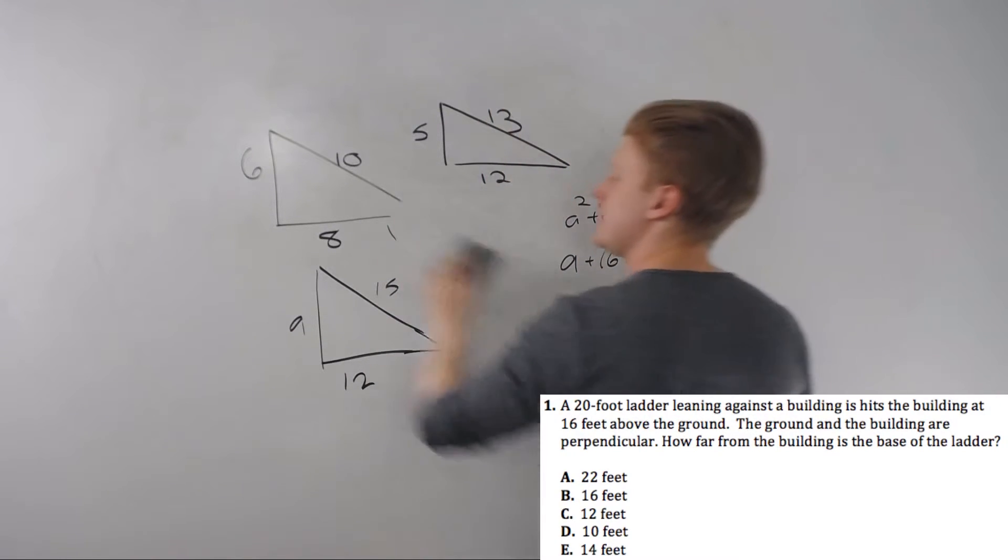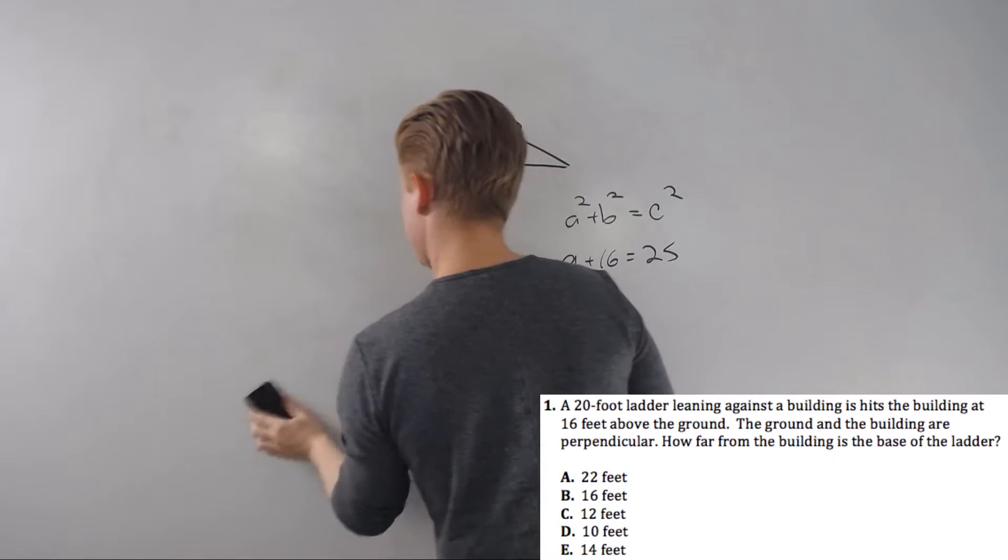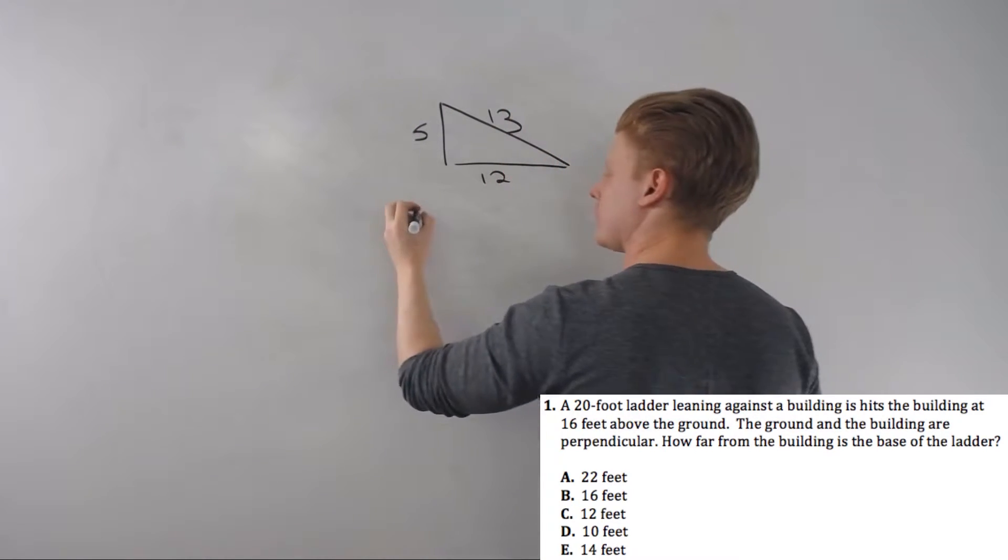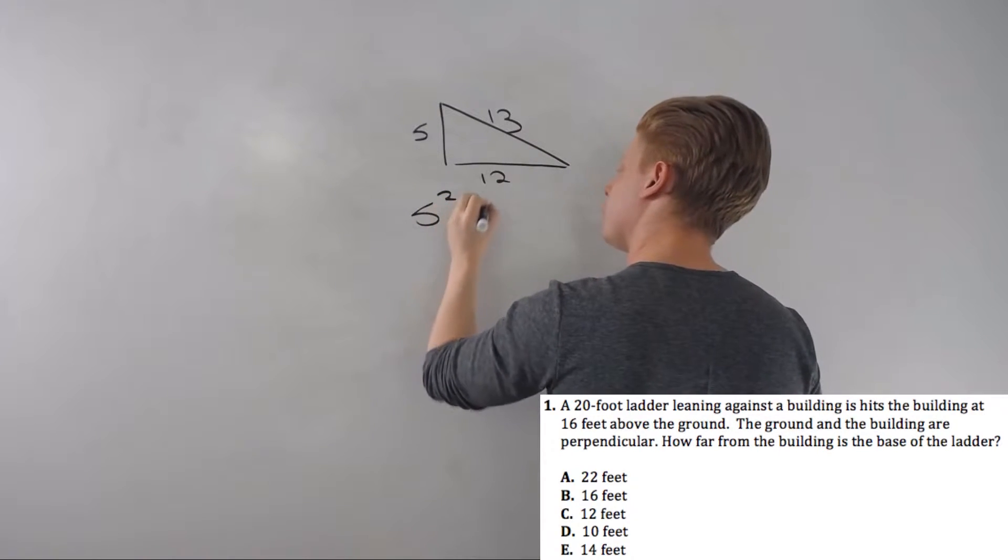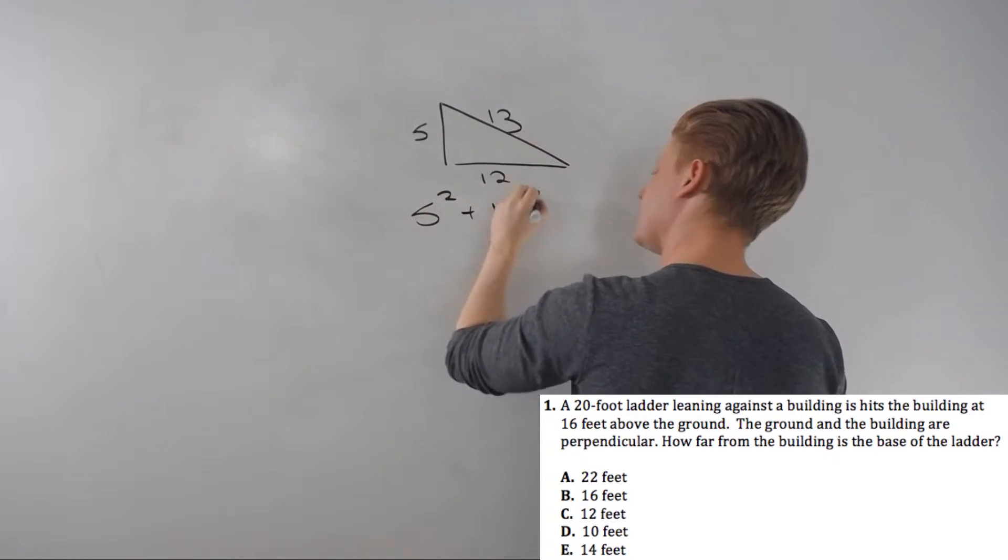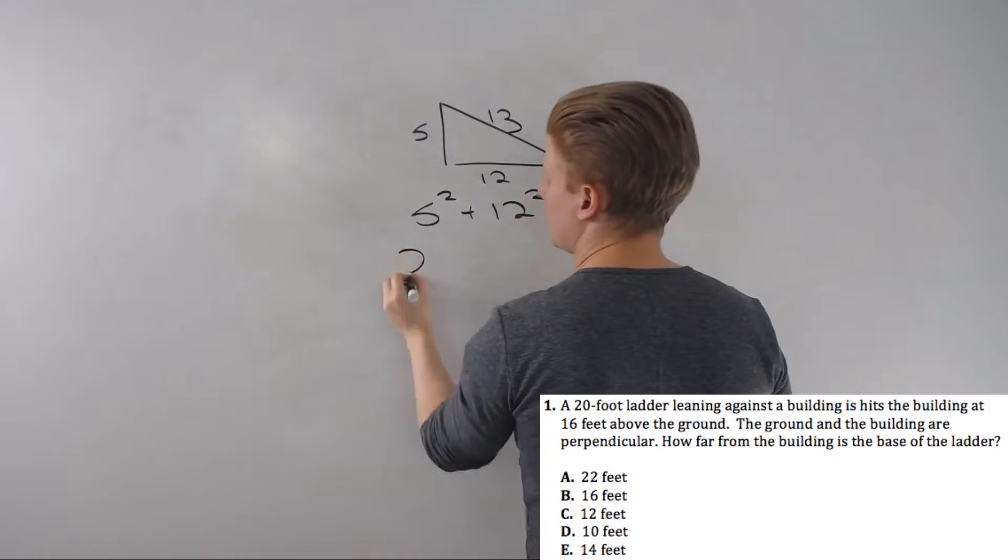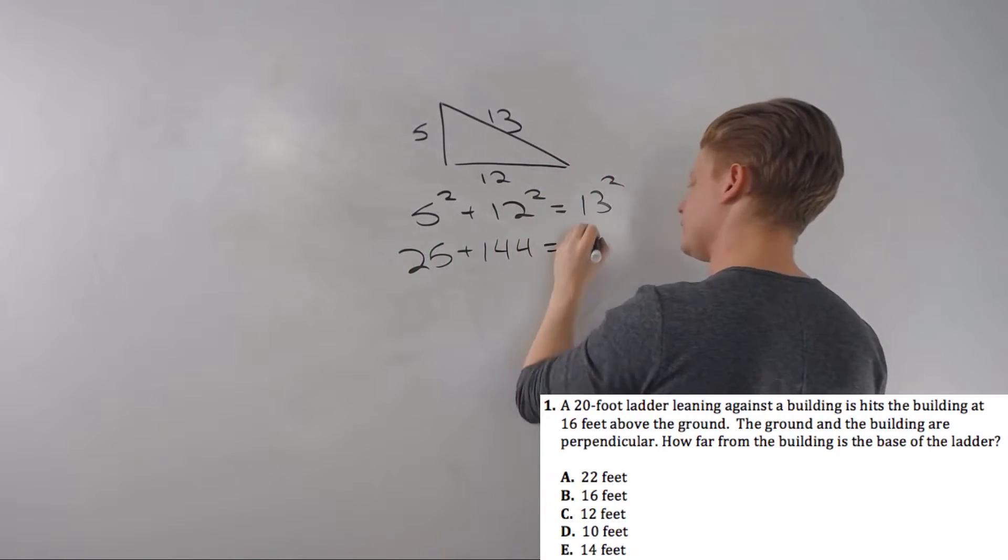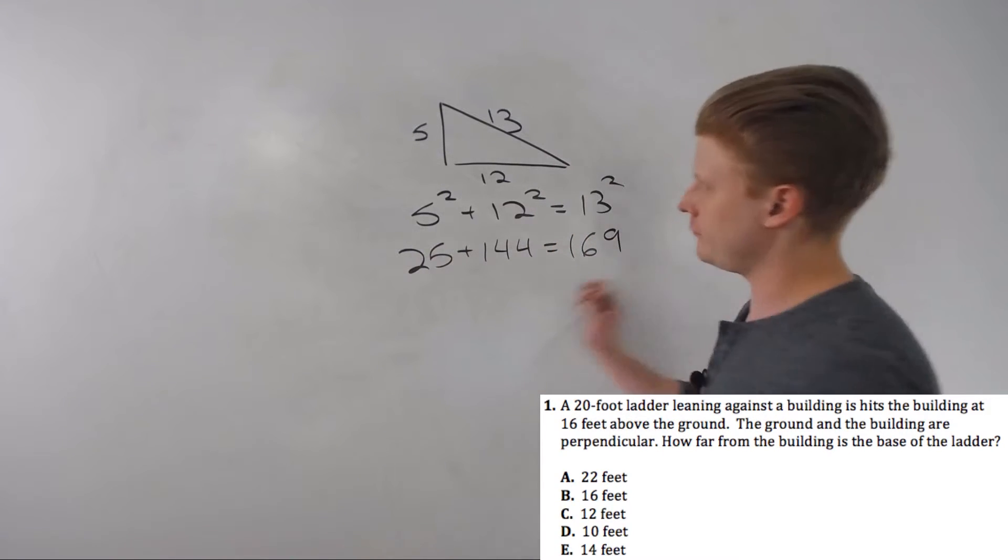The 5-12-13: if we plug that into the Pythagorean theorem, we get 5 squared plus 12 squared equals 13 squared, or 25 plus 144 equals 169. You can see, maybe with a little work, that the math does work out.